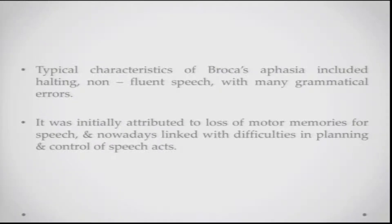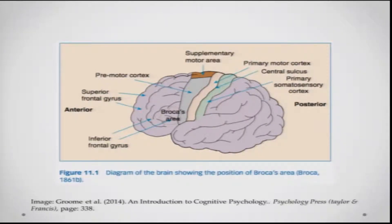This area was linked with his speech production difficulties and came to be known as Broca's area. The disorder of speech production associated with lesions to this area came to be known as Broca's aphasia — probably the most cited aphasia profile. Typical characteristics include halting, non-fluent speech with many grammatical errors. It was initially attributed to the loss of motor memories for speech and is now linked with difficulties in planning and control of speech. This diagram shows Broca's area just anterior to the primary motor cortices, inferior to the supplementary motor area.